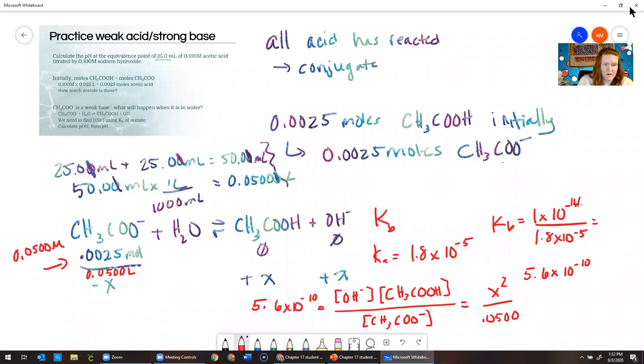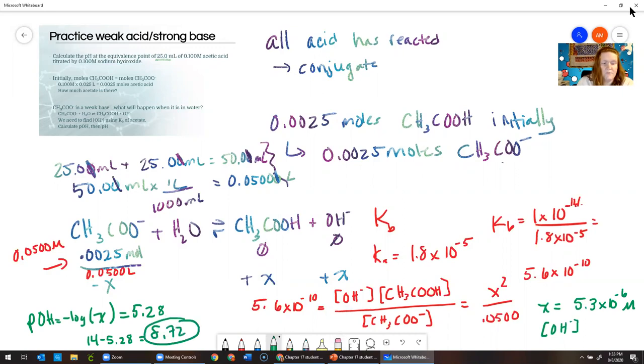We end up with a molarity here of 0.050 molar and we have the KB. The KB is equal to the products over the reactants. We have X and X for our products and our reactant is 0.0500, usually minus X. But we're using the simplifying assumption because the K is very small. For our X value, we get 5.3 times 10 to the negative 6. That's a hydroxide concentration. So we can get to the pOH from that info. We get 5.28, that's the pOH. Then we go 14 minus that, and we get 8.72 for the pH.